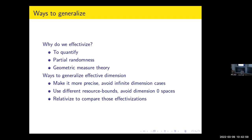Ways to effectivize dimension: to make it more precise, we avoid infinite dimension cases. Maybe the original definition using gauge functions that Mandelbrot introduced can give us a more exact analysis. Sometimes when we deal with countable objects, everything becomes dimension zero, so let's try to do something more useful.